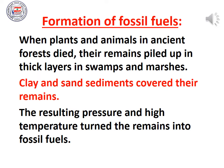But how is that even possible? How can we use materials today that are made from materials formed hundreds of millions of years ago? When plants and animals in ancient forests died back in time, their remains piled up into layers in swamps and marshes. Then clay and sand sediments covered these remains, and the resulting pressure and high temperature turned the remains into fossil fuels. So fossil fuels that we use today are made from the remains of plants and animals that died in ancient forests hundreds of millions of years ago.